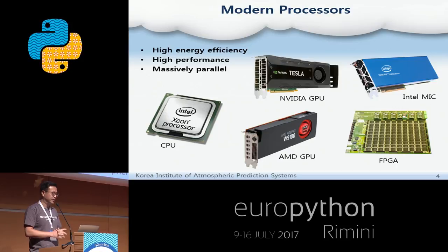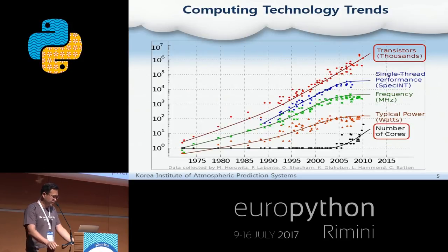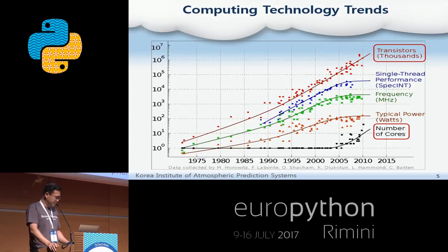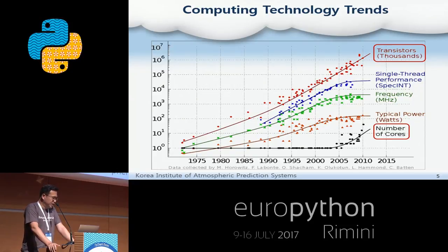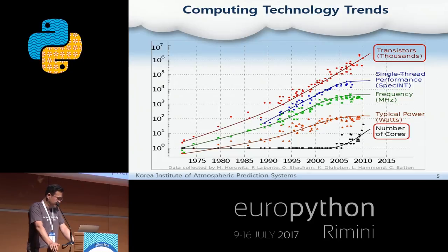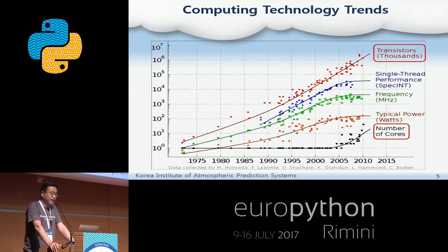They are also massively parallelized. This graph shows the trend of computing technology over the last 30 years. Conventional computer performance was proportional to the clock speed of a CPU core, and the clock speed had been doubling every 24 months according to Moore's Law for a long time. However, since the mid-2000s, the clock speed had hardly increased due to power consumption limitations. Instead, as you can see at the bottom of the lines, the number of cores is increasing rapidly. For reference, recent GPUs have thousands of cores with about 1 GHz clock speed. This trend seems likely to last a long time.